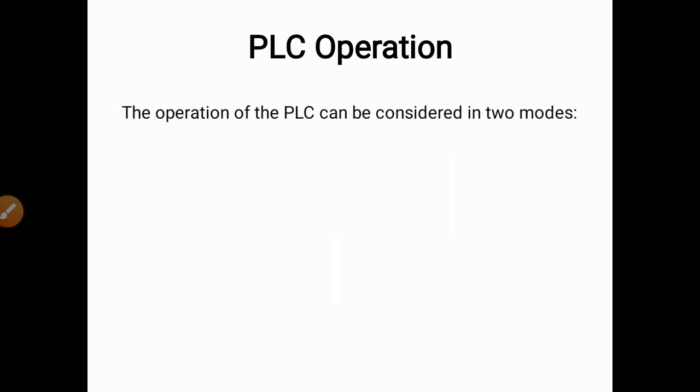PLC operation can be considered in two modes. The first mode is the input/output scan mode, where inputs and outputs are scanned and given to respective channels one by one. The second is the execution mode, where the program is executed as per the status of the input/output channels.